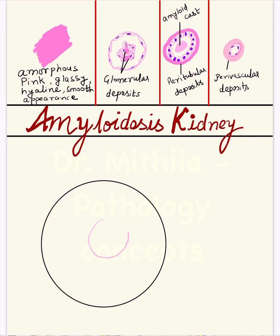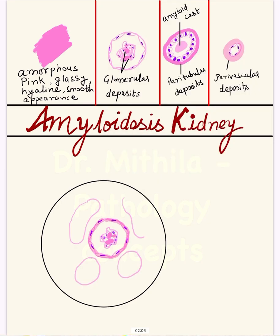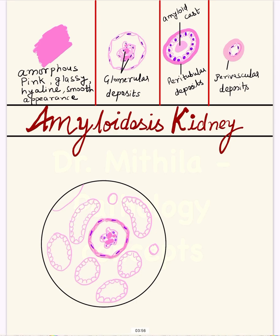Now let us move on to how to make the diagram of amyloid kidney. You draw the glomeruli lined by the parietal epithelium, make the nuclei in the center, make the capillary tuft with the endothelial and mesangial cells, and make the amyloid deposits using a pencil. Then you make the tubules and vessels surrounding it — the tubules lined by cuboidal epithelium — and you can also make an amyloid cast in the center lumen of the tubules.